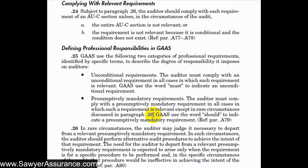For example, there's a lot of discussion in other AU-C sections about sending accounts receivable confirmations. When we get to those sections, we'll see that there might be circumstances where sending a confirmation is not practical — maybe because customers typically don't return those confirmations. In that case, we would have to stray from this requirement and possibly perform alternative procedures, such as looking at cash receipts after the period end. When the auditor does depart, he must perform some kind of alternative procedure to achieve the intent of that requirement.